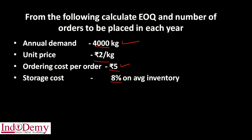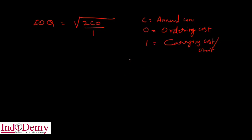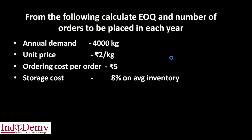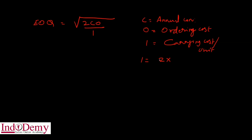I equals: the unit cost is ₹2, so I = 2 × 8% = 2 × 8/100 = ₹0.16. The carrying cost per unit is ₹0.16.